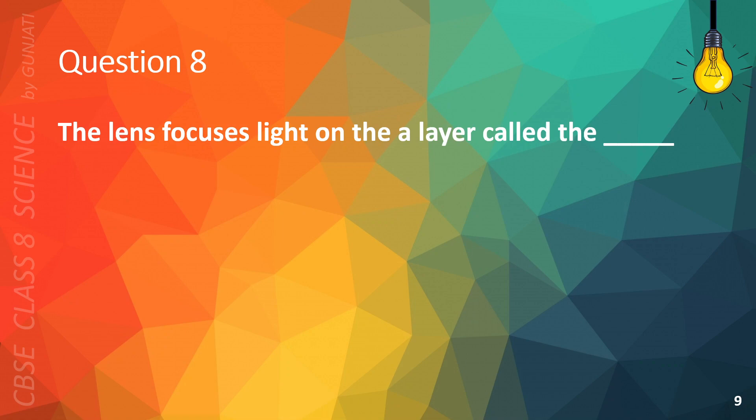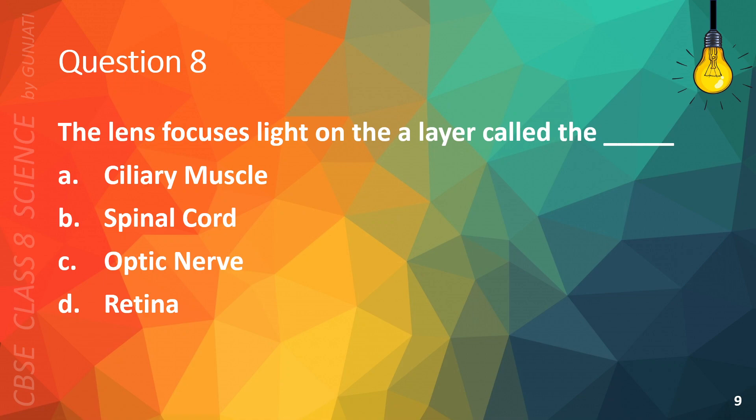Question 8. The lens focuses light on the layer called the A. Ciliary muscle, B. Spinal cord, C. Optic nerve, or D. Retina. The correct answer is D, retina.